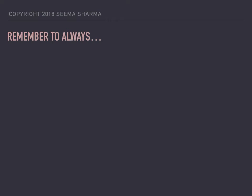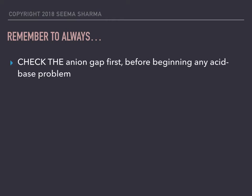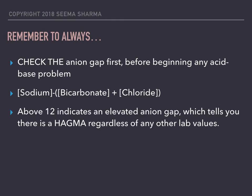Whenever you start an acid-base problem, you should always remember to check the anion gap first. The anion gap is the concentration of sodium ions minus a combination of the concentrations of bicarb and chloride ions. An anion gap above 12 indicates that it's elevated, and what that tells you is that there is a high anion gap metabolic acidosis regardless of what the other lab values like the pH suggest.